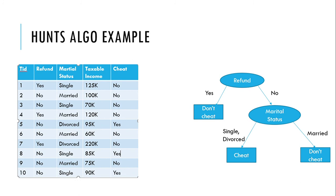That is called a pure node. An impure node means, for example, when refund equals no, we have different outputs — the person is both cheating and not cheating. So there are two different values for refund equals no, and that is called impurity in the node. Our goal is to reduce the impurity as much as possible. We will discuss further in the next video.